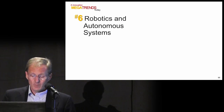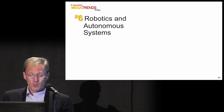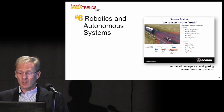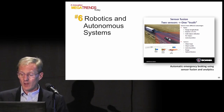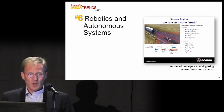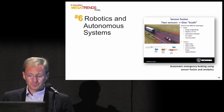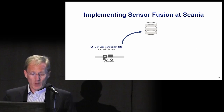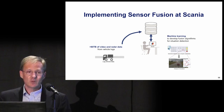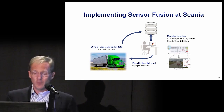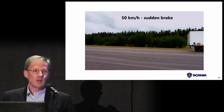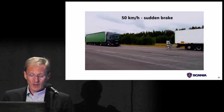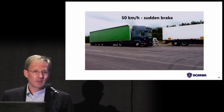Trend number six, which many people in this room are working on, is robotics and autonomous systems. Here's an example of autonomous emergency braking of a truck, done by Scania. They use model-based design, sensor fusion, big data, and machine learning. In this design, they fuse radar and camera data together, starting with 80 terabytes of video and radar data from vehicle logs. Then they use machine learning to develop fusion algorithms for situation detection. Based on that, they create a predictive model they put into the vehicle. As a driver who drives on highways with trucks behind me, I hope every truck gets this installed.